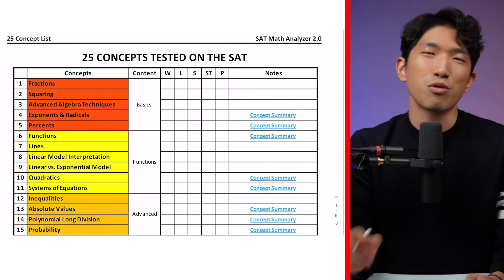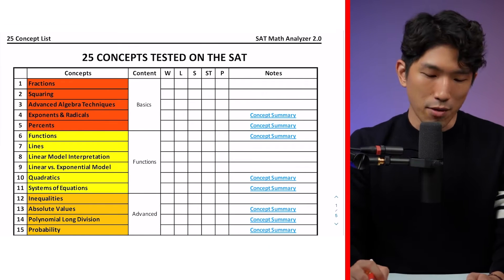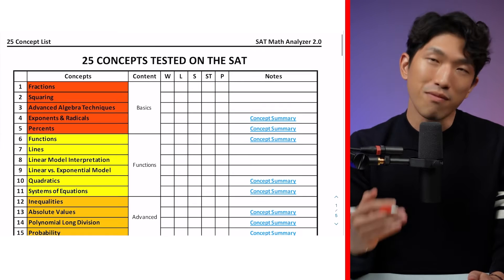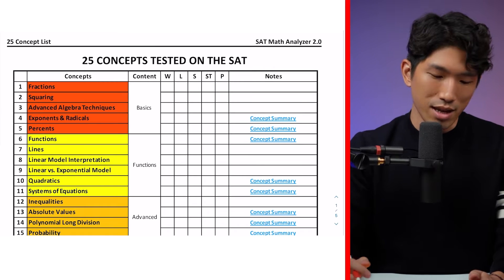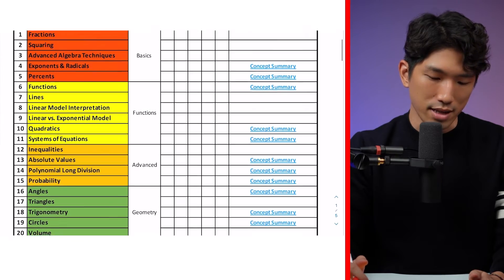Anyways, as I mentioned, there is a quick, simple formula to hit the top one percentile. And there are three moving parts. And the first is going to be concept mastery. What do I mean by that? Well, as we all know, there are 25 concepts that are tested on the SAT. And these are the 25 concepts you will see on your next SAT.